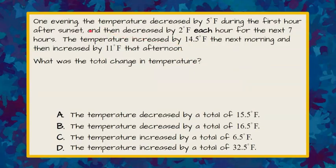One evening the temperature decreased by 5 degrees Fahrenheit during the first hour after sunset and then decreased by 2 degrees Fahrenheit each hour for the next seven hours.